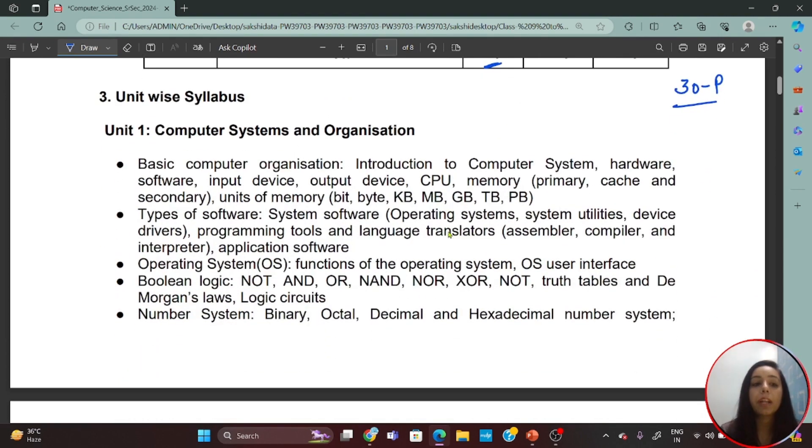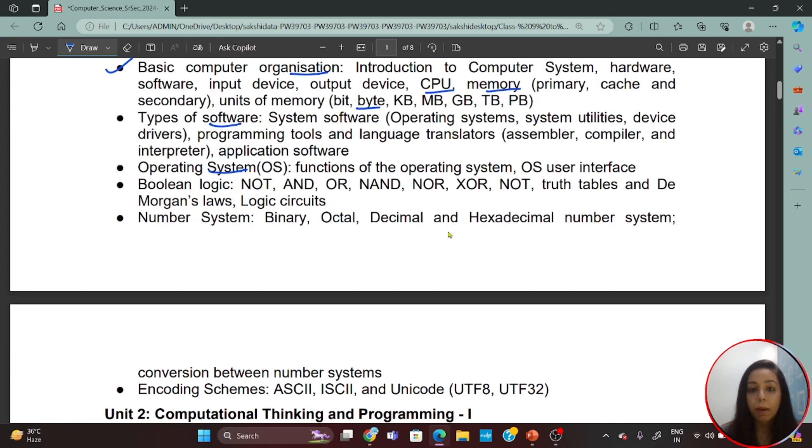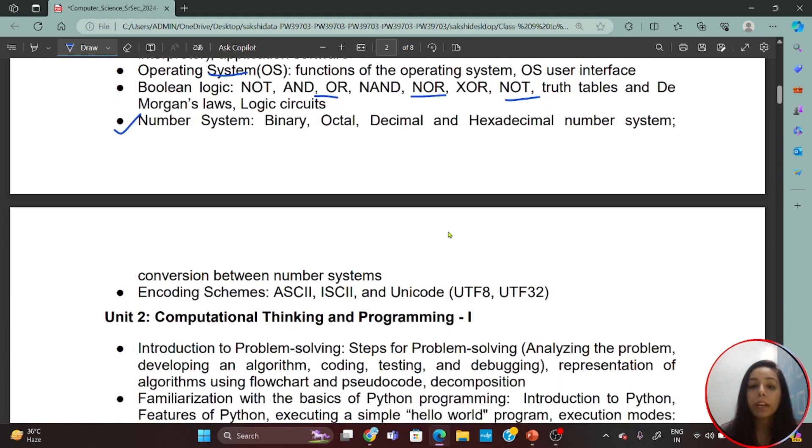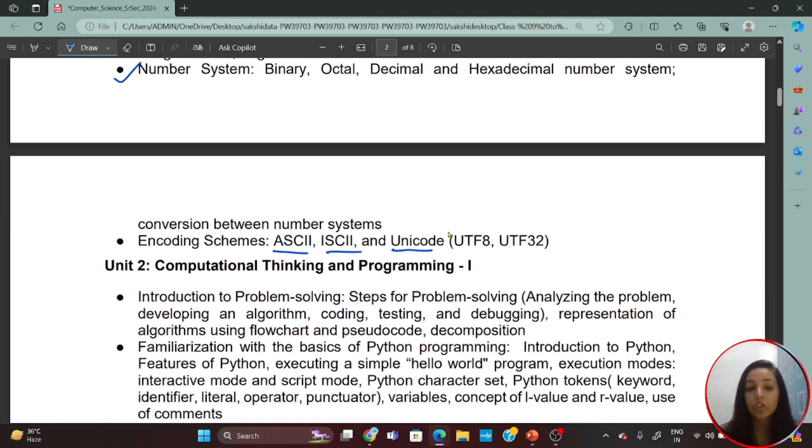Now let's look at unit-wise syllabus. The first unit we have to study is Computer Systems and Organization. You will study basic computer organization, hardware, software, input device, output device, units of memory, types of software, operating system. These all you have to study. Now this unit is in different chapters. Then in the next chapter you will study logic gates, which is a new concept for you. If you have a science stream opted, these things you have to study in physics. Then the number system from the 6-7-8 class, so it is well and good. Otherwise, it can be a new chapter for you. Then in this unit you will have ASCII, Unicode, and coding schemes, which you will learn further.